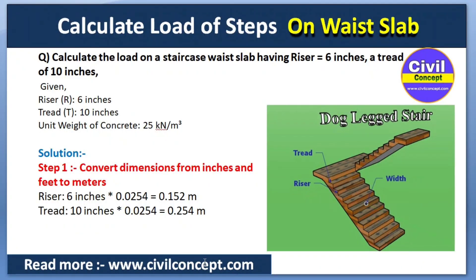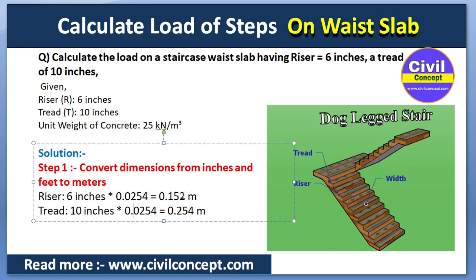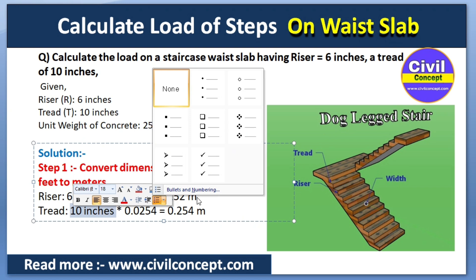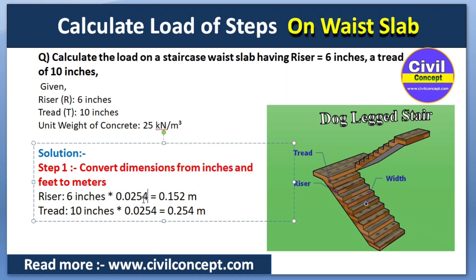Our question is: calculate the load on the staircase waist slab having a riser of 6 inches and tread of 10 inches. The unit weight of concrete is 25 kilonewton per meter cubed. In step one, we convert all dimensions from inches to meters by multiplying by 0.0254, which is the conversion factor from inch to meter.